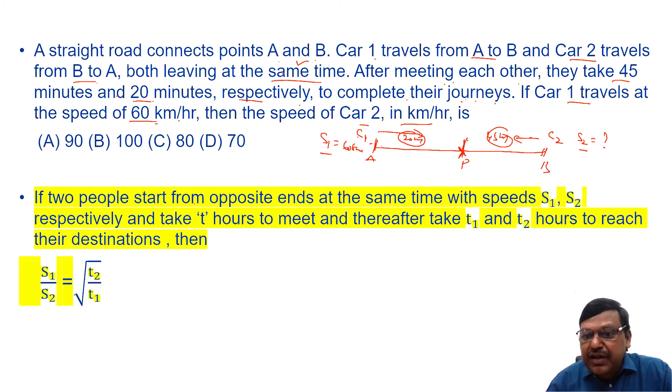See, because they are starting at the same time, by the time they met, they have taken same amount of time, right? And what is important is the next one. Thereafter take T1 and T2 hours to reach the destinations, then S1 by S2 equals to square root of T2 by T1.